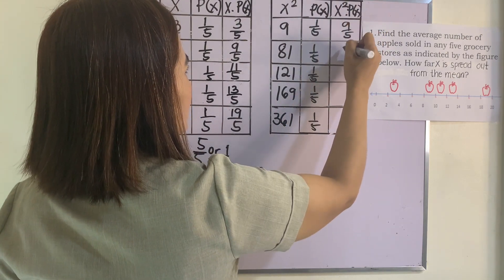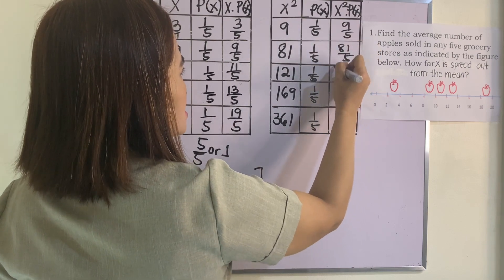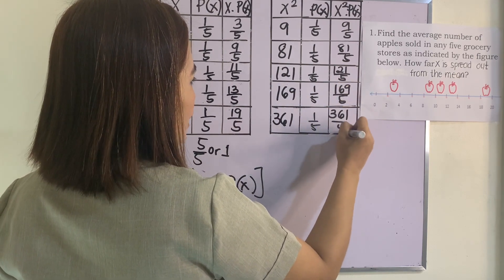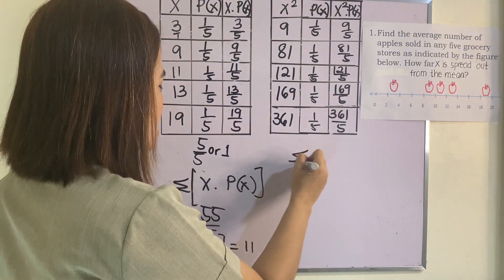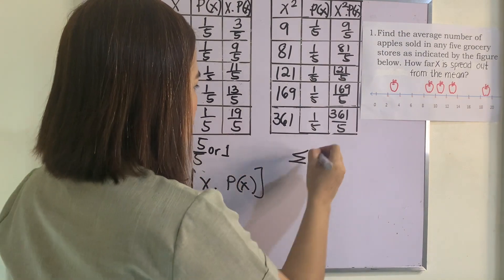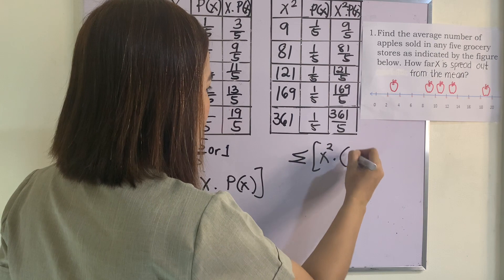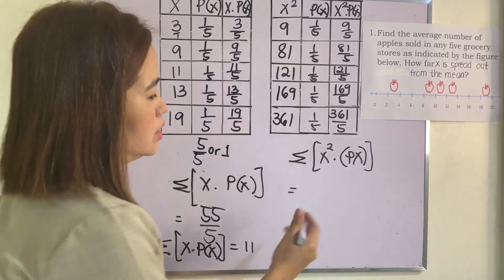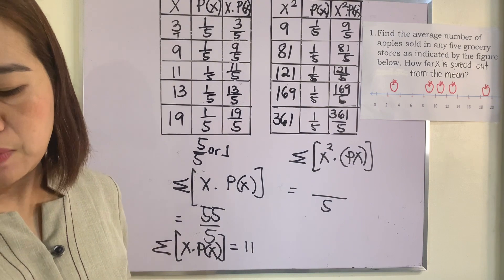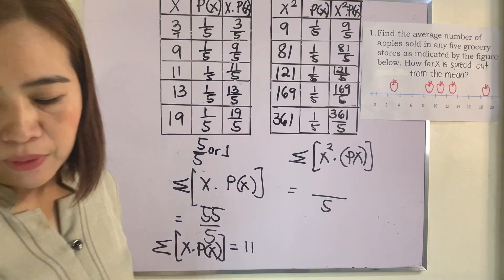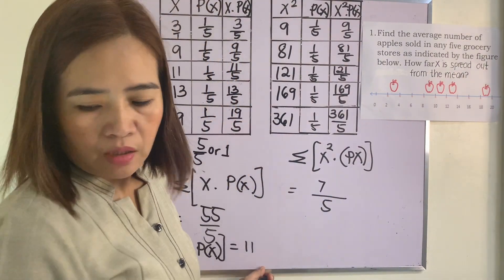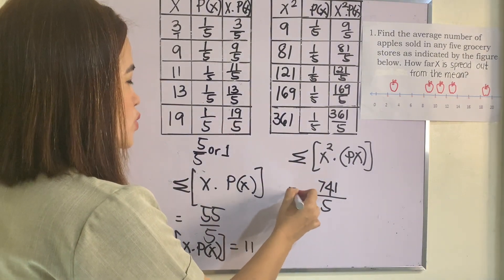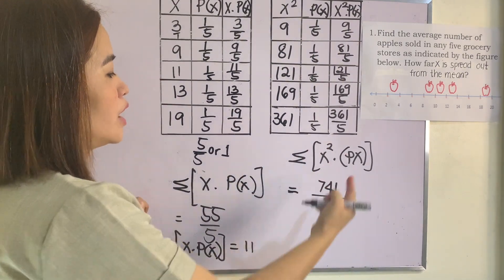Multiplying x² × P(x): 9/5, 81/5, 121/5, 169/5, and 361/5. The summation of x² times P(x) — we add all the numerators and copy the denominator since these are similar fractions. We get 9 + 81 + 121 + 169 + 361 = 741. So Σx²·P(x) = 741 over 5.